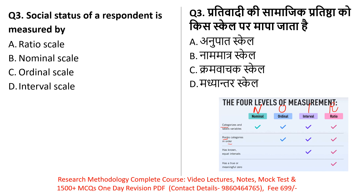In the ratio scale, there are all the characteristics of the interval scale, plus a true zero meaning. In this question, you need to know: when you are measuring a respondent's social status, which scale will you use? You need to understand what social status is first.